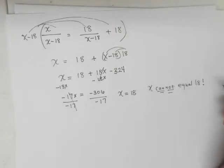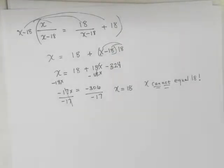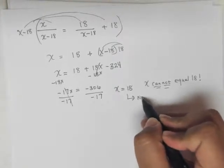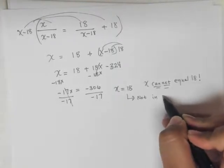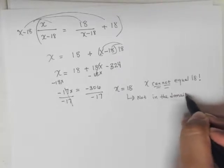All right, x cannot be equal to 18 because then it would make the denominator 0, and we'd end up dividing by 0. So what we know is that 18 is not in the domain of the function or of the equation here.